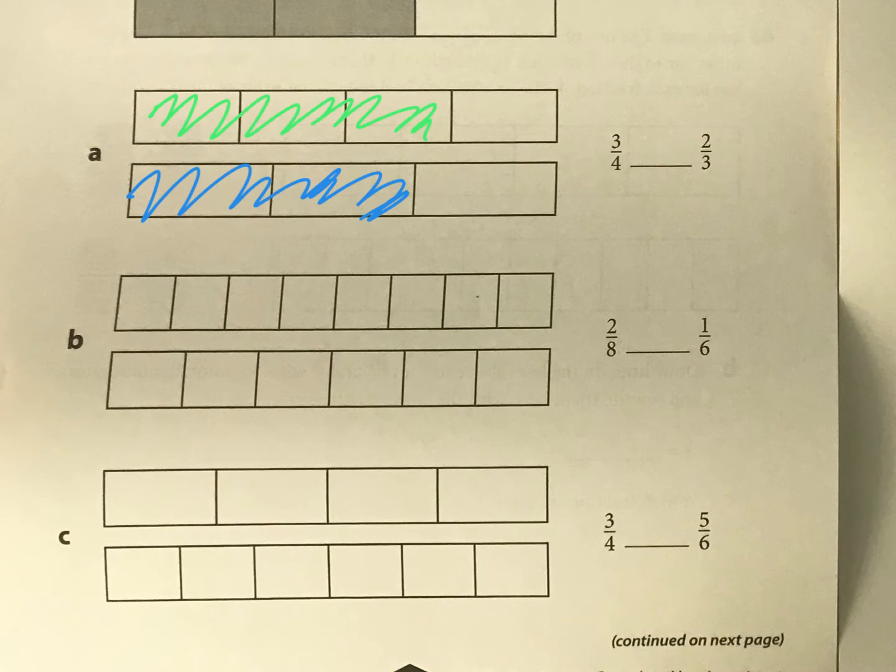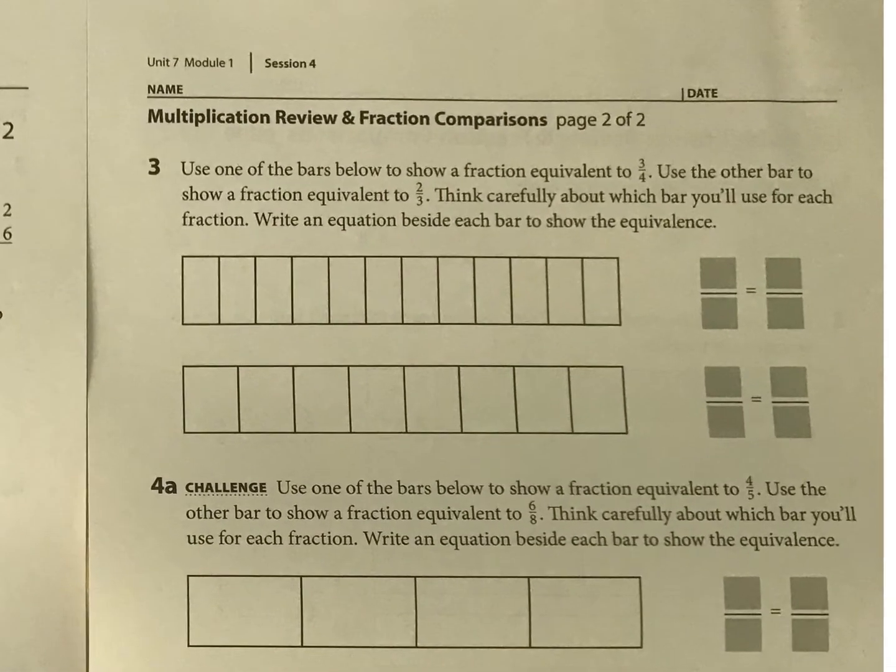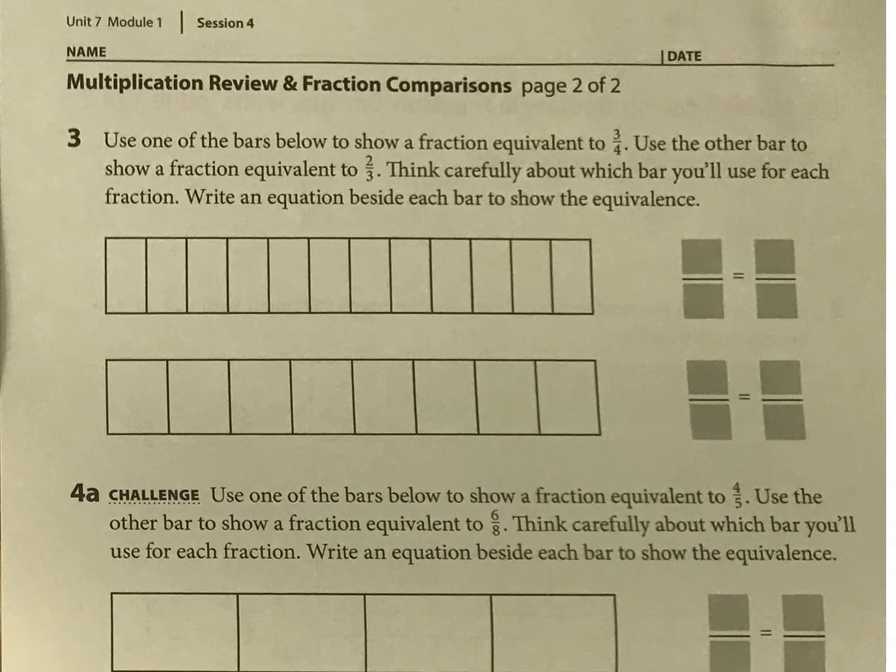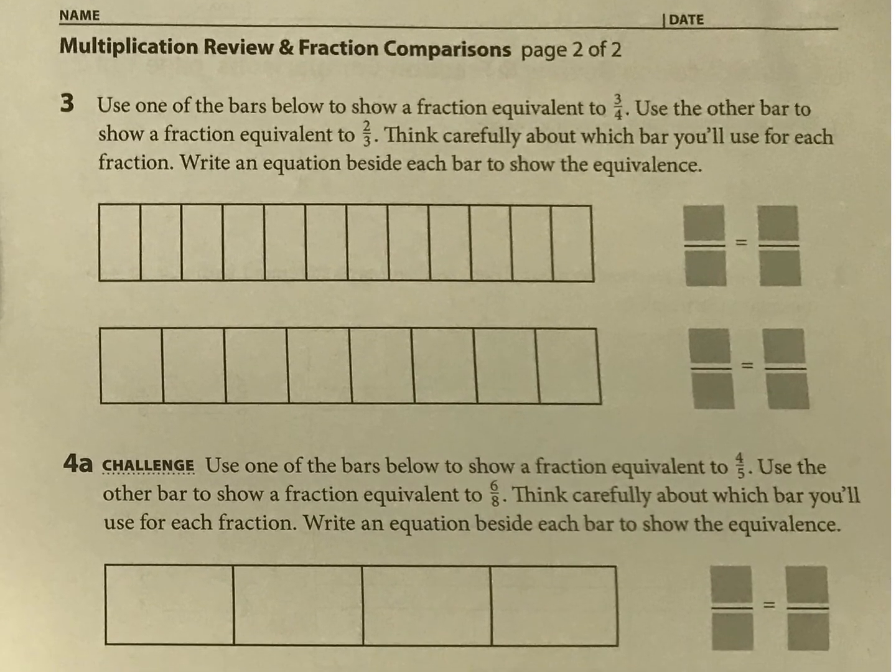And here I can see that by a little bit, 3 fourths is greater than 2 thirds. But, and then over here, we are supposed to make an equivalent fraction to 3 fourths and 2 thirds. But it says, think carefully about which bar you'll use for each fraction.